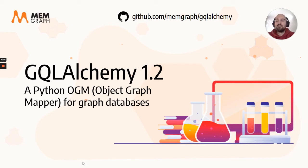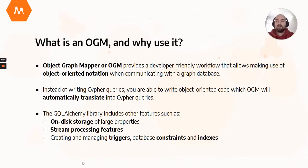If you aren't familiar with it, GQLAlchemy is a fully open source Python library that works as an Object Graph Mapper, or OGM for short, a link between graph database objects and Python code. Before we dive into the new release, let me explain in short what an OGM is.